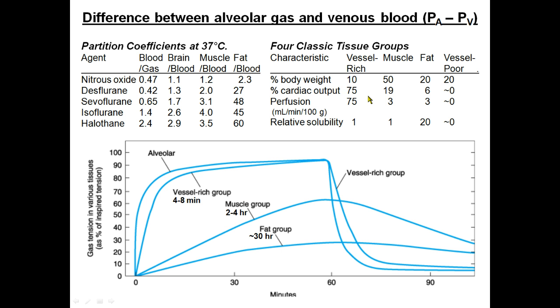The third item that we've discussed in the factors that affect uptake was the pressure gradient between the lungs and the venous blood in the pulmonary system.